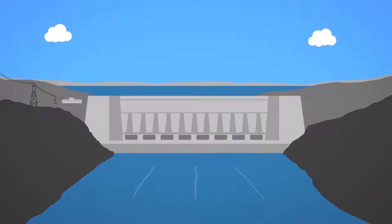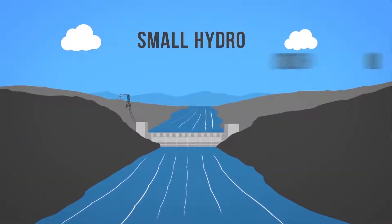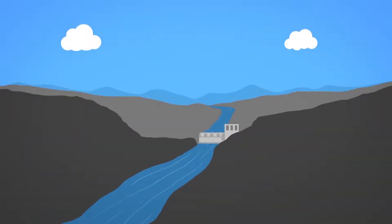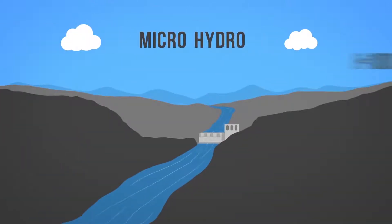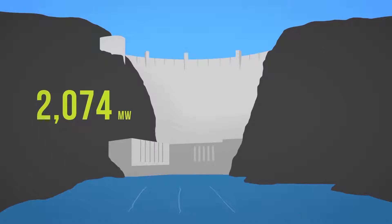There are various sizes of hydro plants that produce electricity: large hydro, greater than 30 megawatts; small hydro, 100 kilowatts to 30 megawatts; and micro hydro, less than 100 kilowatts.